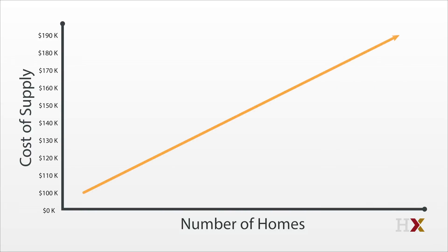It might be a line, but it might also bend. Of course, it has to slope up, because we've ordered the sites from the cheapest to the most expensive. And now this thing is called a supply curve. But not everyone lives in a single family home in the city — how right you are.